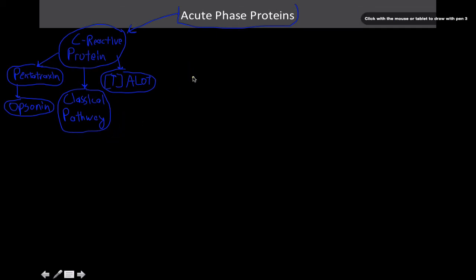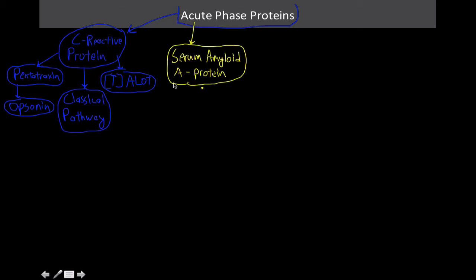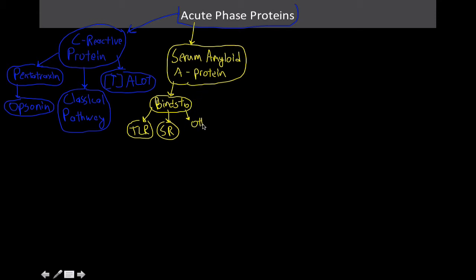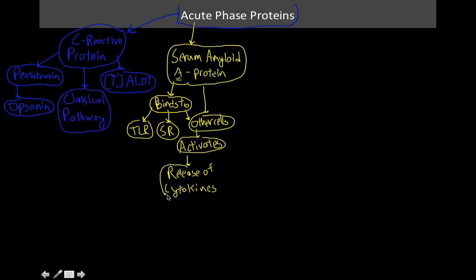The next protein is serum amyloid A protein. It acts on TLRs — toll-like receptors — scavenger receptors, and other cells. The A can help you remember: think of it as 'acute' or that it's going to activate things. It activates the release of cytokines, which, in this context, are known to cause the telltale signs of inflammation.